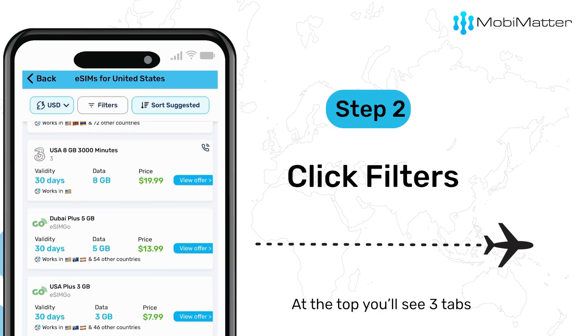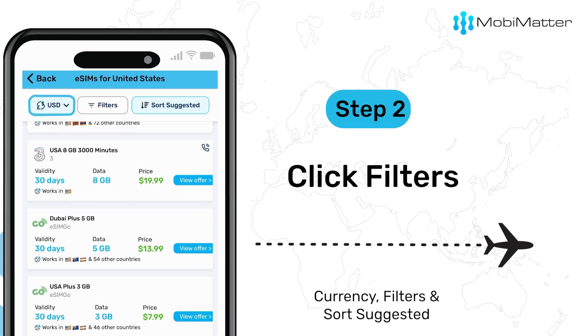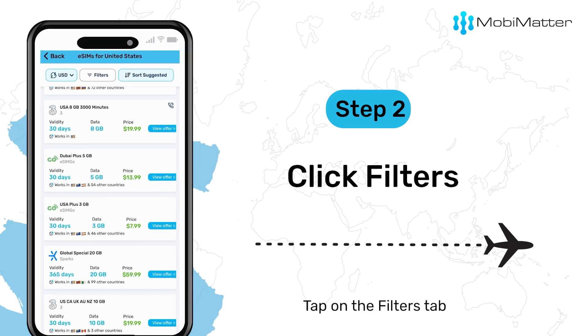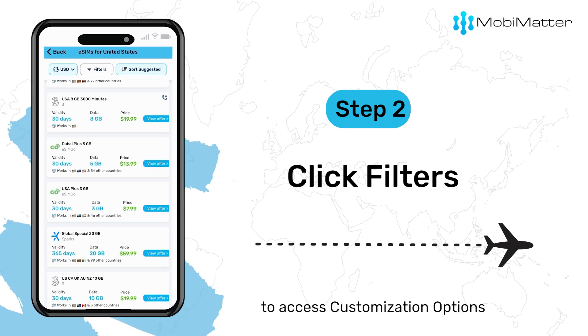Step 2: At the top, you'll see three tabs — Currency, Filters, and Sort Suggested. Tap on the Filters tab to access customization options.